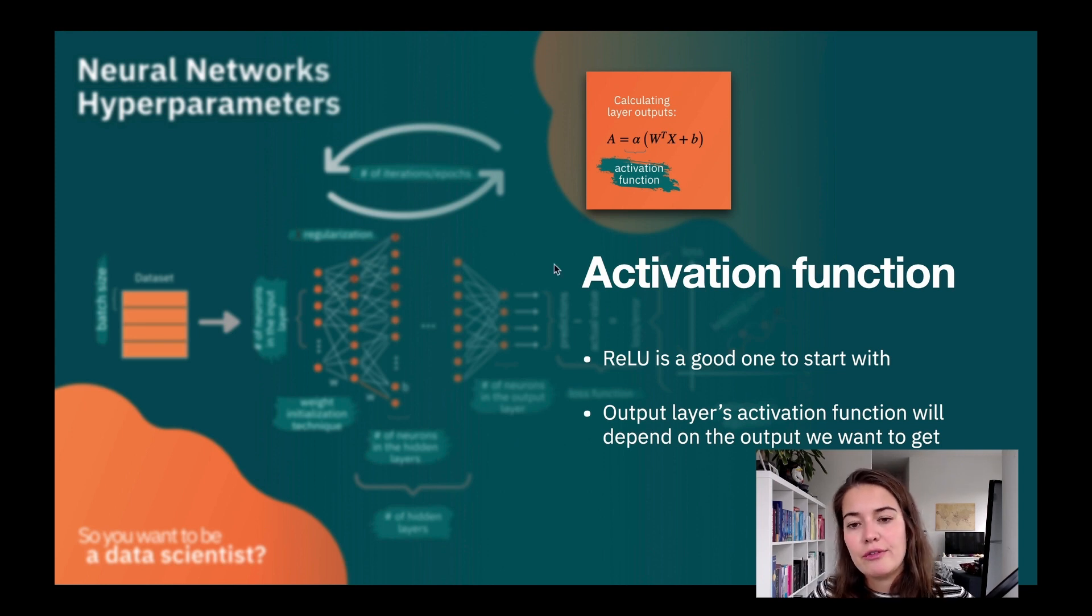We have the activation function. If you remember, this is how we calculate the output of one layer. Remember, these are the vectors. This is the weight vector of the whole layer. This is the input that we got from the previous layer, and this is the bias of each of the neurons. And this big A, the capital A, tells us it's basically one big matrix or one big vector of all the outputs of the neurons in one layer.